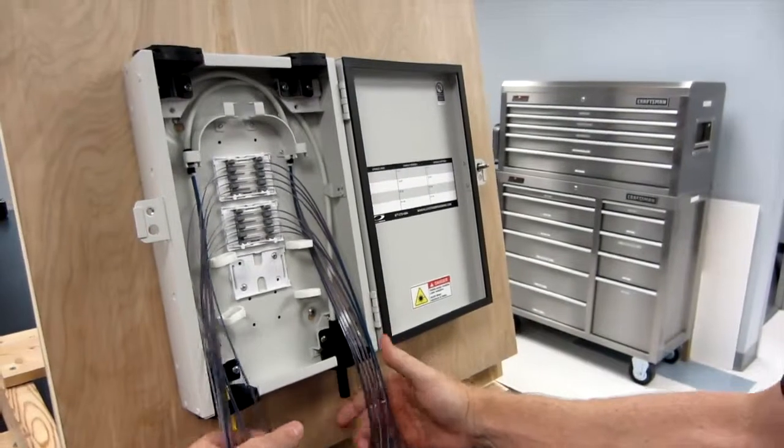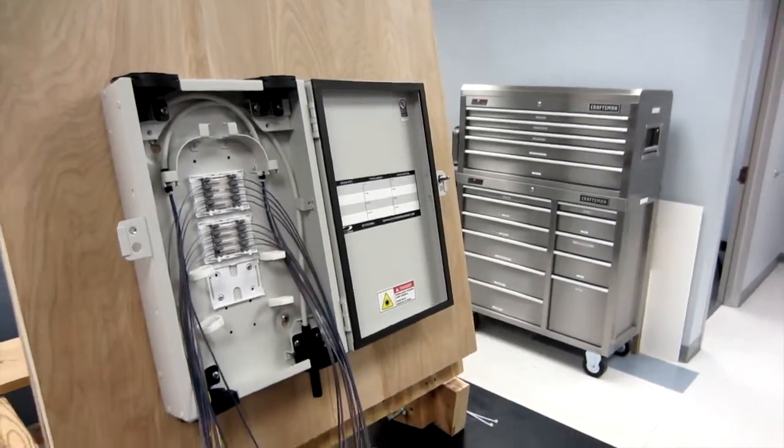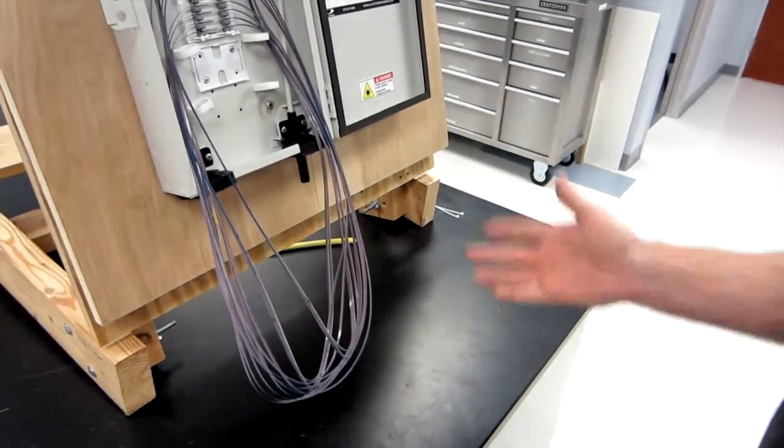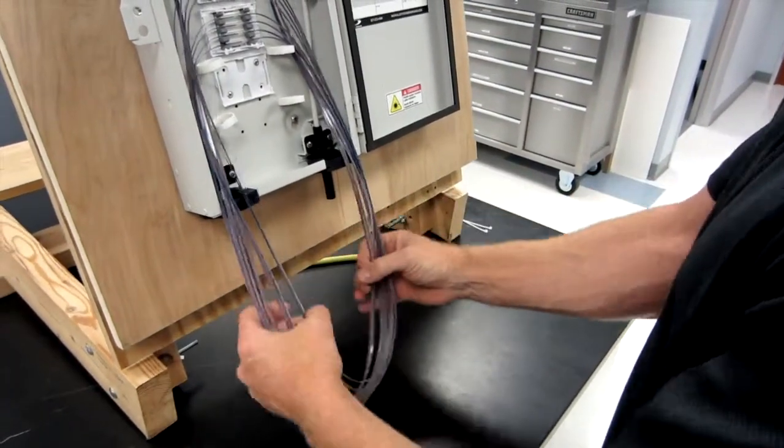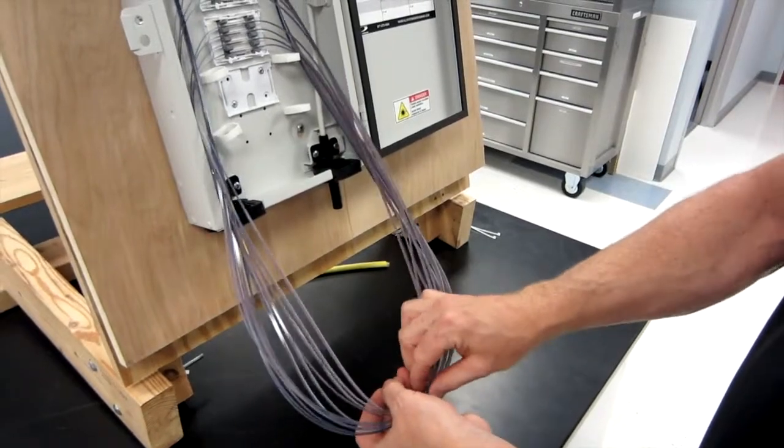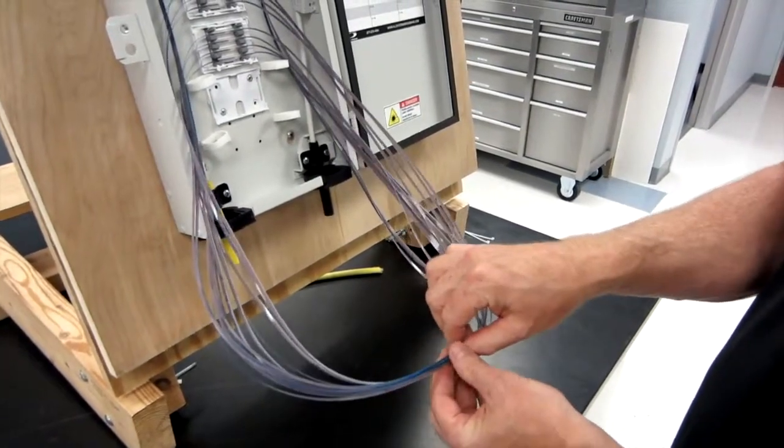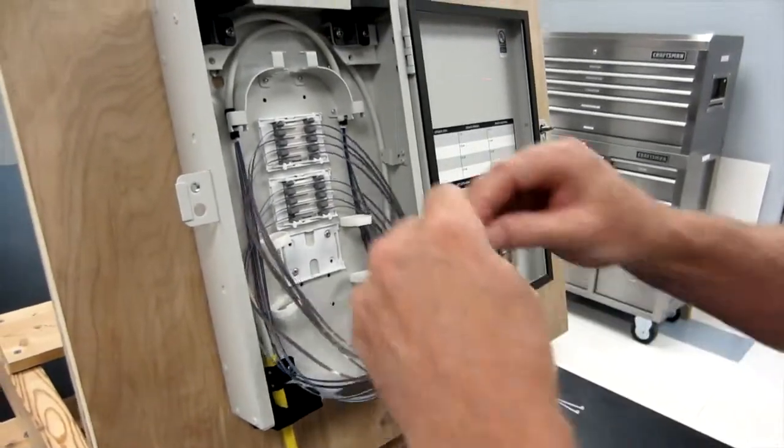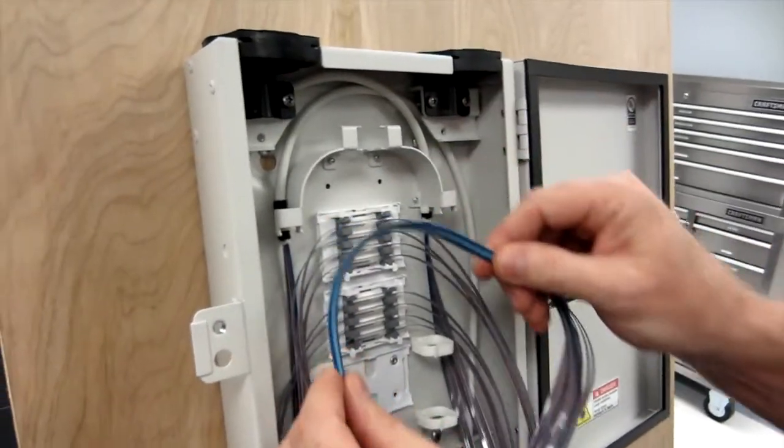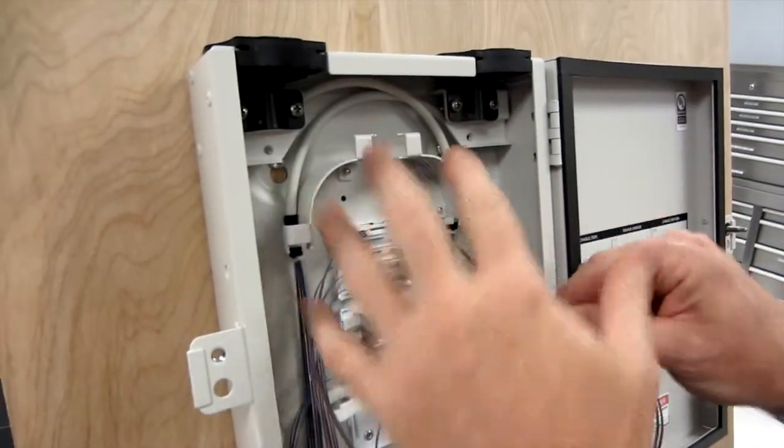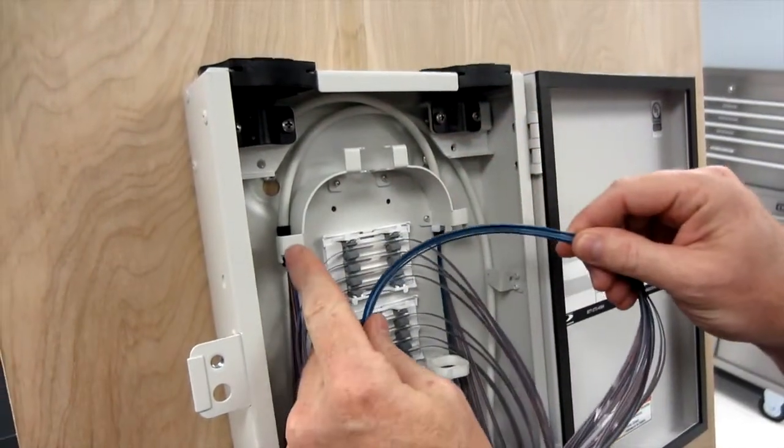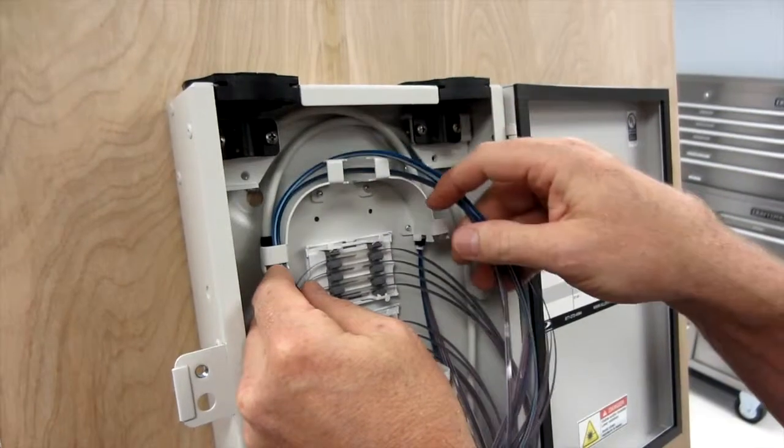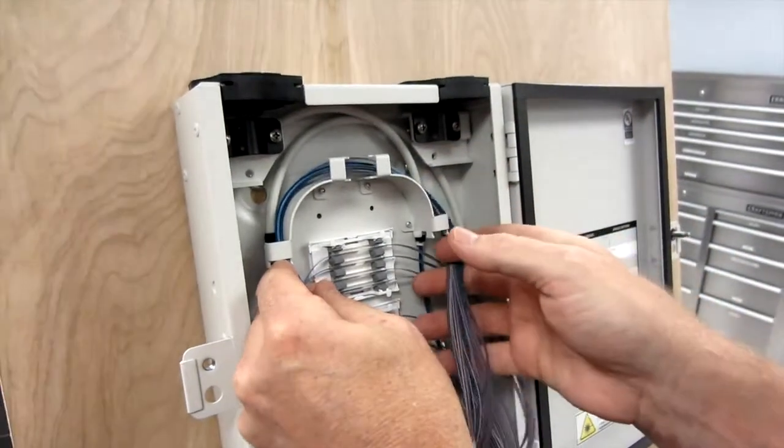So then we're going to take our ribbon loops which are already kind of twisting in this direction. Remember step one we twisted left, step two we're going to twist right. It doesn't matter if you go left then right or right then left. Again we're creating a cross and we're going to lay our loops over the bend controls. So here are our bend controls at the top. We want to make sure we're under these tabs, so we're just going to put it right under the tab like that, under all the bend controls.